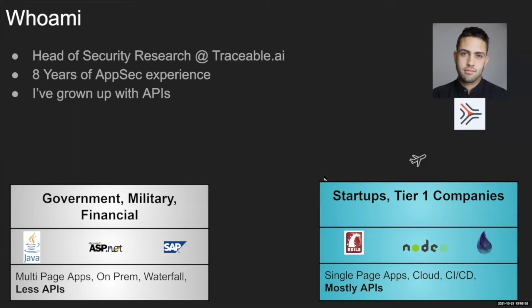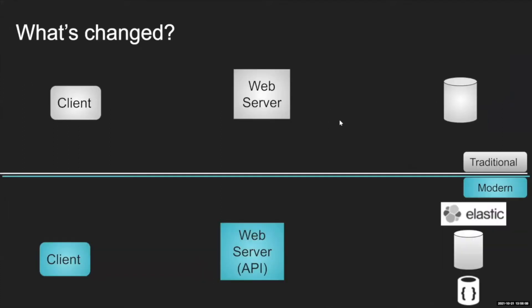I basically had to adapt my mindset and say: in order to find vulnerabilities in this type of new environment, I have to understand what the new threats are. This is what led me to get into API security and write the OWASP Top 10 for APIs. So I want to talk briefly about what's changed.